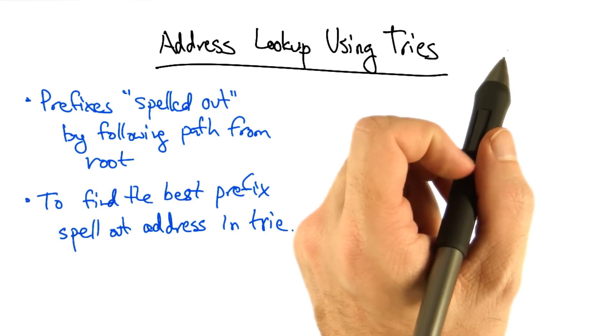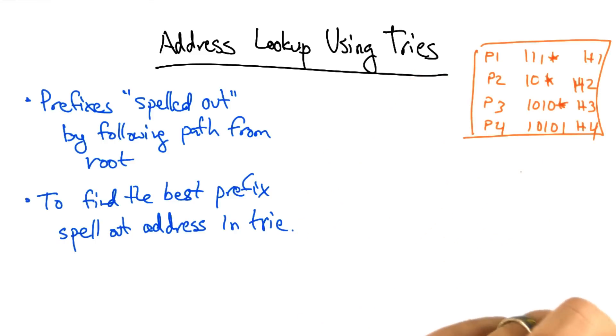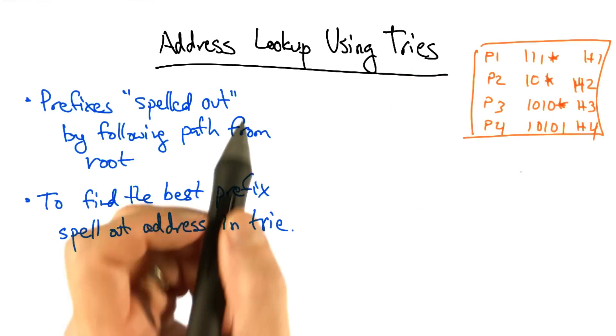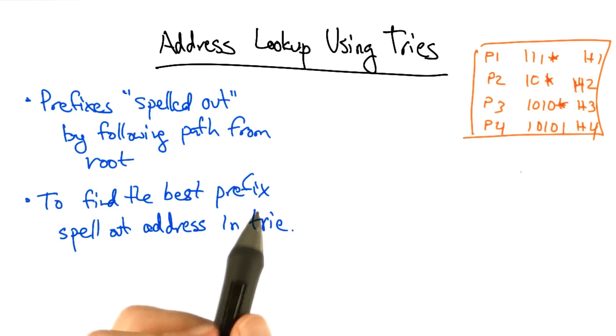For example, let's suppose we have the following table. Such a lookup table has entries of varying lengths. Let's see how this might be encoded in a trie.